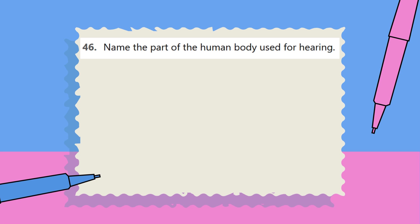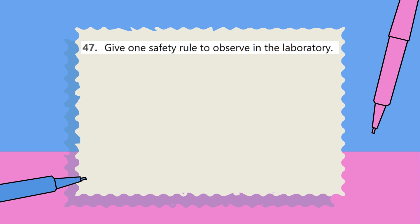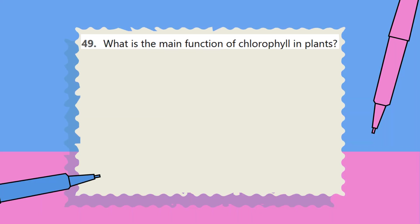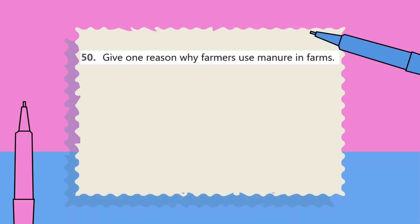Question 47: Give one safety rule to observe in the laboratory. Question 48: Mention one property of metals. Question 49: What is the main function of chlorophyll in plants? Question 50: Give one reason why farmers use manure in farms.